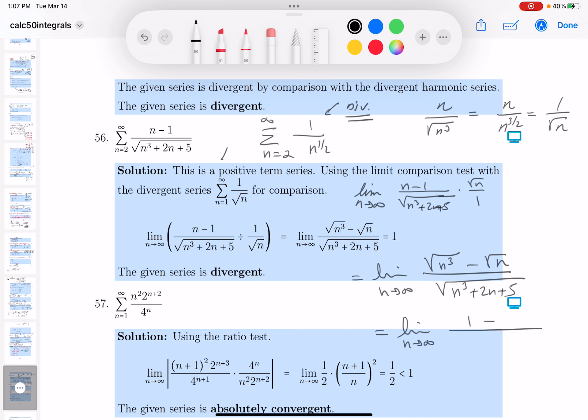And what do you get there? 1 minus, well, if I divide by the square root of n cubed, I get the root of 1 over n squared. What do I get in the bottom? I get 1 plus, I'm dividing by the square root of n cubed, so it's going to be 2 over n squared. And over here, I get minus 5 over n cubed.